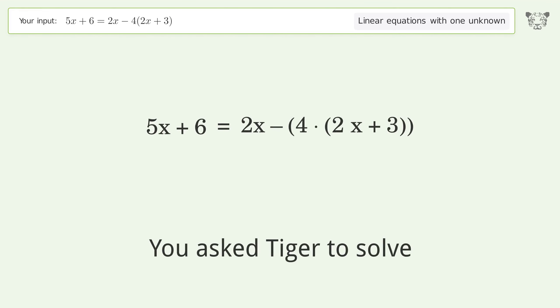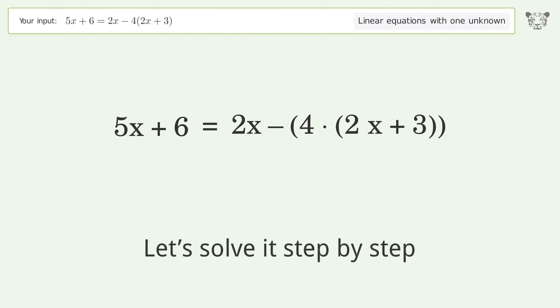You asked Tiger to solve this. This deals with linear equations with one unknown. The final result is x equals negative 18 over 11. Let's solve it step by step.